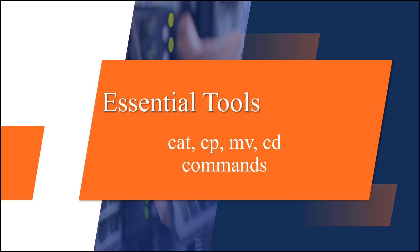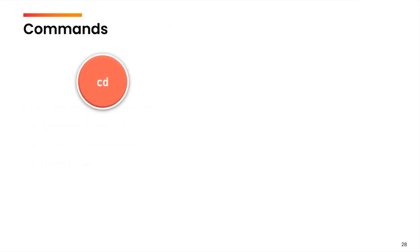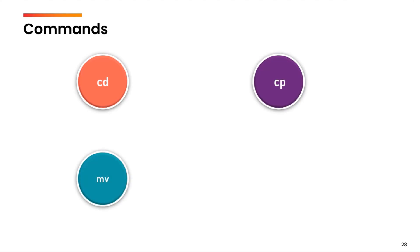Hello everyone. In this video we are going to talk about the file path — how to specify the path for any file to perform any particular operation — and then we are going to learn about the copy and move commands. Finally, we will end this video by talking about concatenating files. The commands we are going to cover here are cd, cp, mv, and cat.